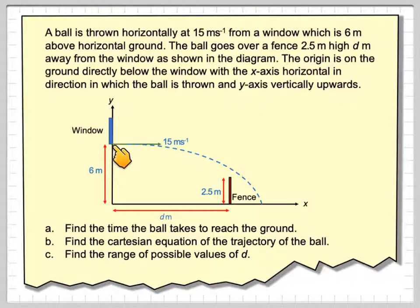The ball is thrown from this window here at 15 metres per second so the angle is actually going to be zero for this projectile motion. We've got the fence which is 10 metres away and 2.5 metres high and we know that the ball goes over the fence.